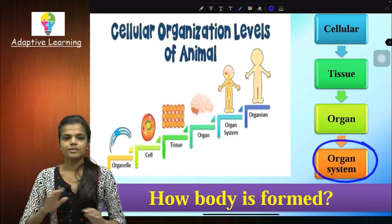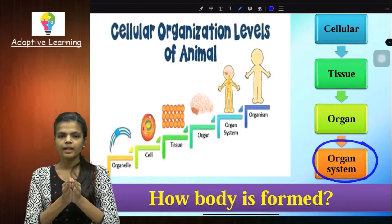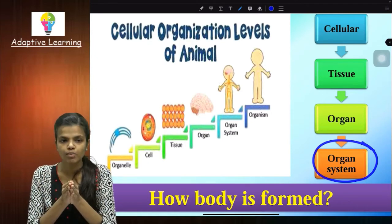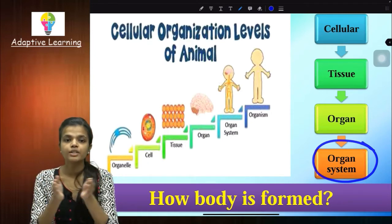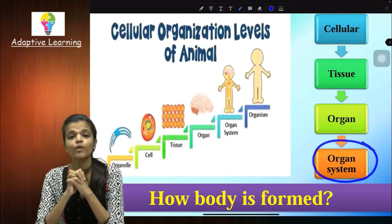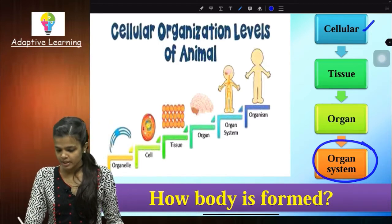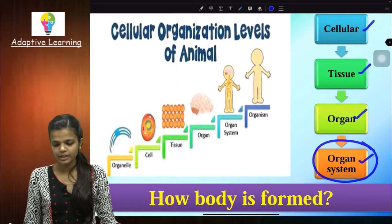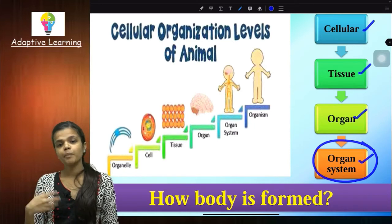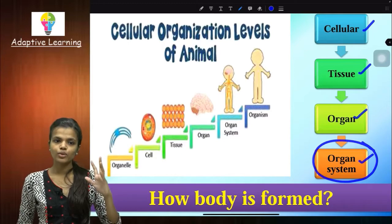Let's revise it. When many cells work together, they are called tissue. When many tissues work together, they are called organs. When many organs work together, they are called the organ system, and they carry out the life processes. Your body is formed at these levels: cellular, tissue, organ, and organ system. This organ system level is basically present in your body, but not in all other animal kingdoms.